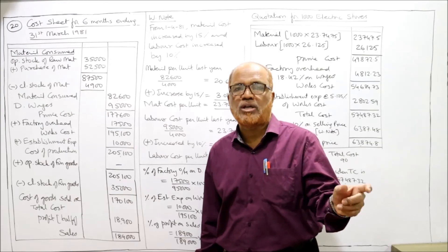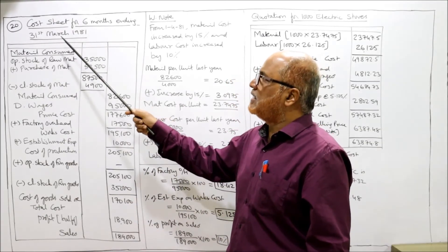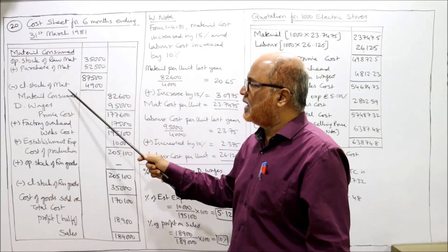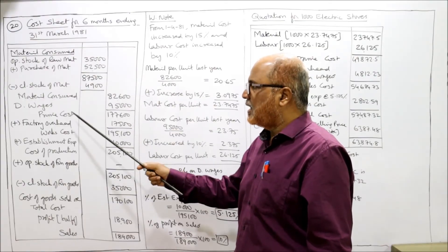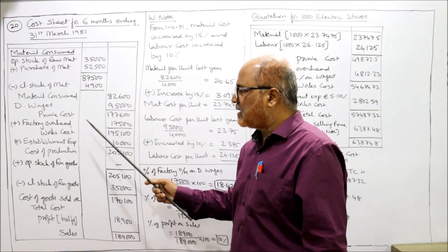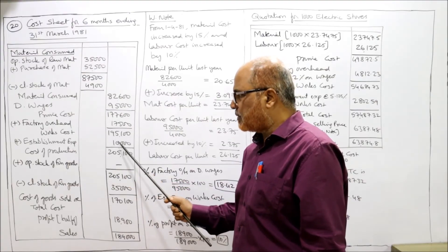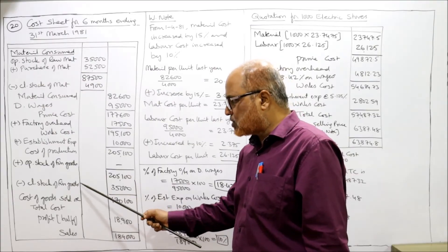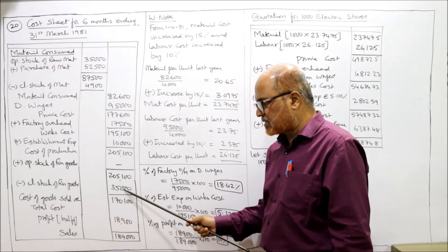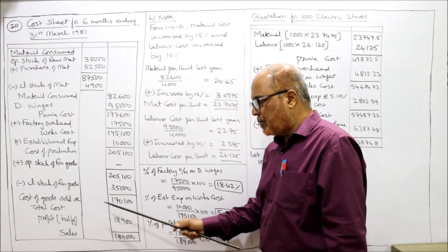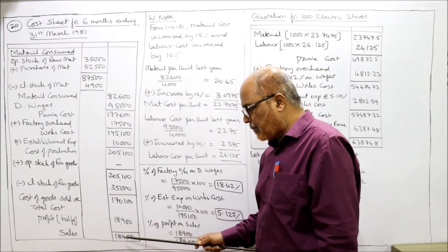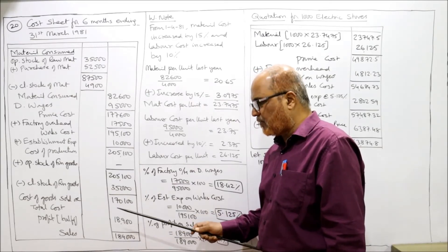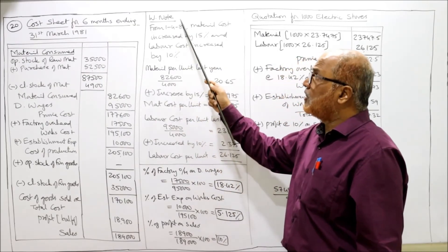So first we make the statement of cost for the last 6 months ending 31st March 1981. Material consumed: opening stock of raw material plus purchase of raw material less closing stock of material — material consumed 82,600. Direct wages 95,000, prime cost. Factory overhead added, works cost. Establishment expenses added, cost of production. Opening stock of finished goods was not there, closing stock of finished goods 35,000 subtracted. Cost of goods sold or total cost. Sales 1,89,000, profit (balancing figure) 18,900.